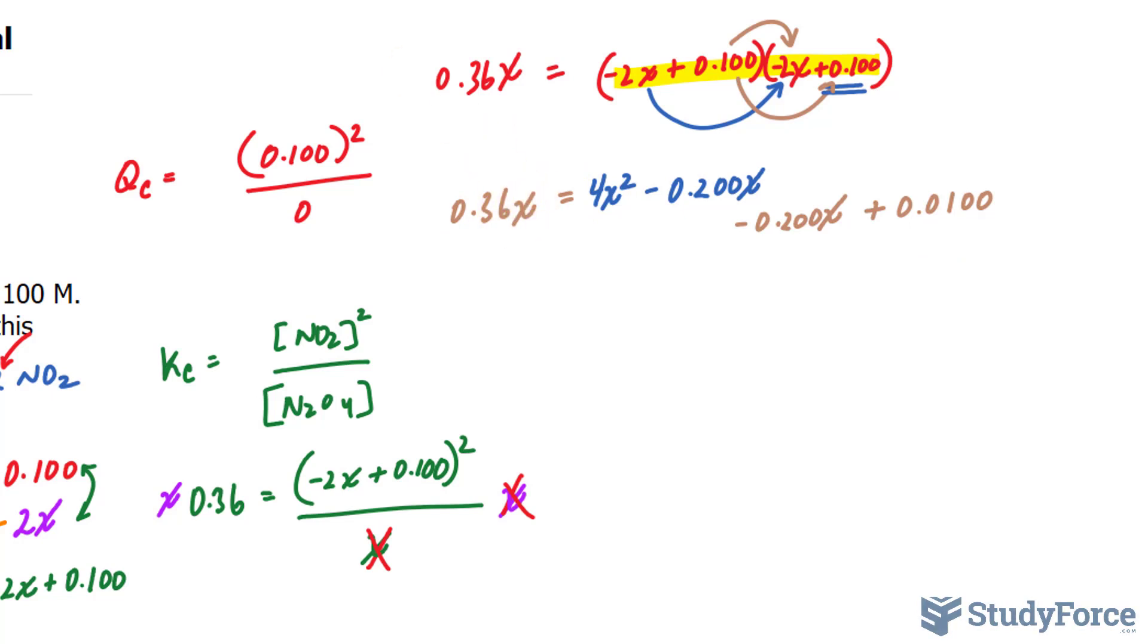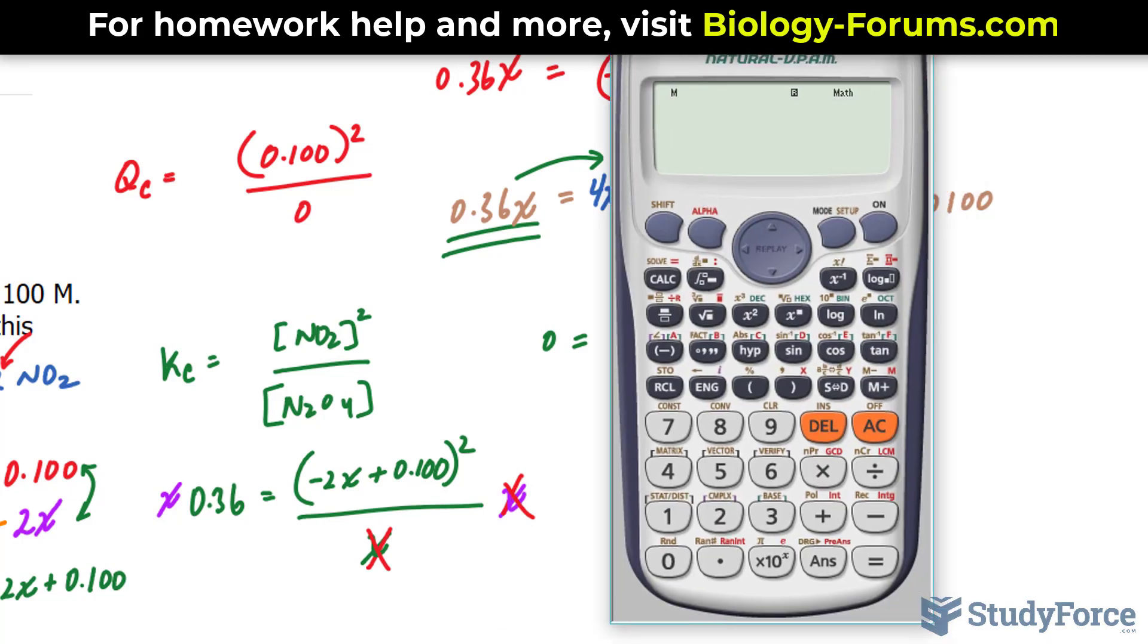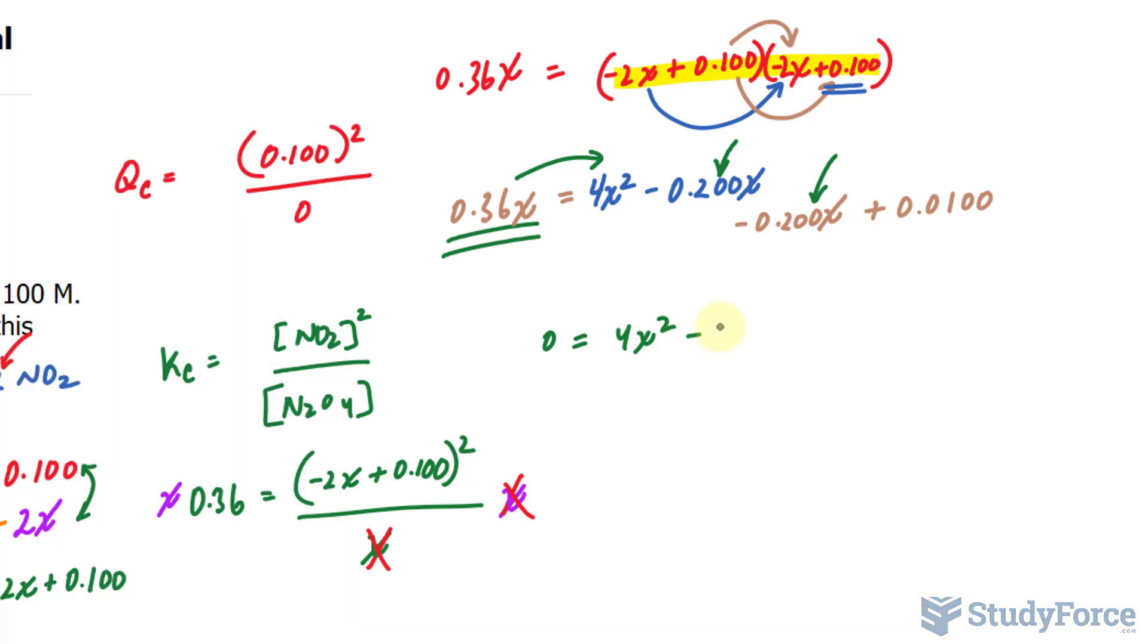Okay, now we have to gather up all like terms. I'll bring this term over. We get 4X squared. And we can combine this term, which is now negative because we brought it over, with this one and that one. So let's use our calculator. We have negative 0.2 minus 0.2 minus 0.36. That gives us negative 0.76X. And finally, we have this constant, which I'll place at the very end.